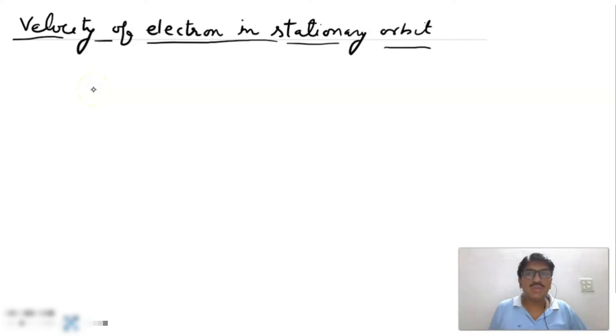Dear students, welcome you all in this video in which we determine the velocity of electron in stationary orbit by Bohr's theory, and we know that angular momentum is equal to nh upon 2π.